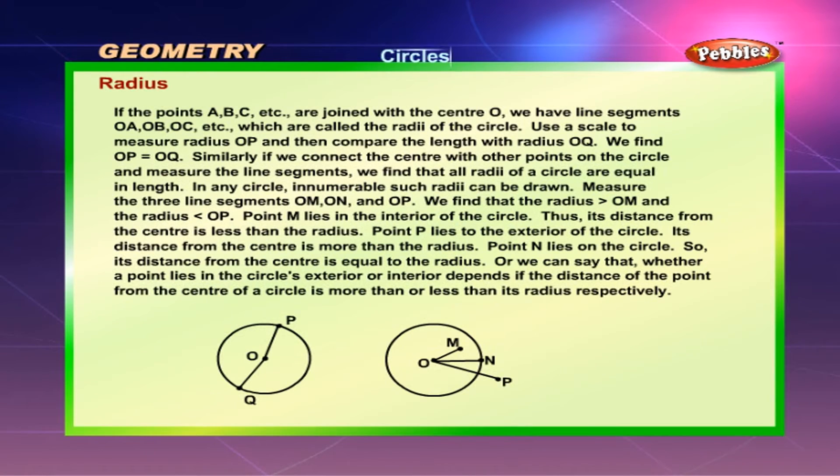Point P lies to the exterior of the circle. Its distance from the center is more than the radius. Point N lies on the circle. So its distance from the center is equal to the radius. Or, we can say that whether a point lies in the circle's exterior or interior depends if the distance of the point from the center of a circle is more than or less than its radius respectively.